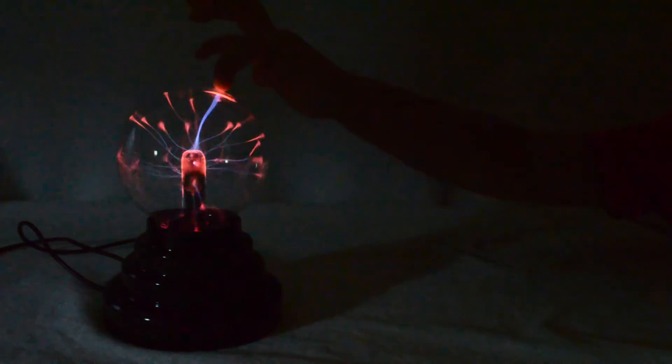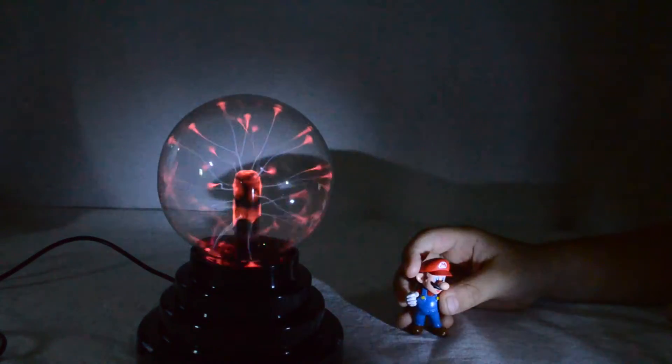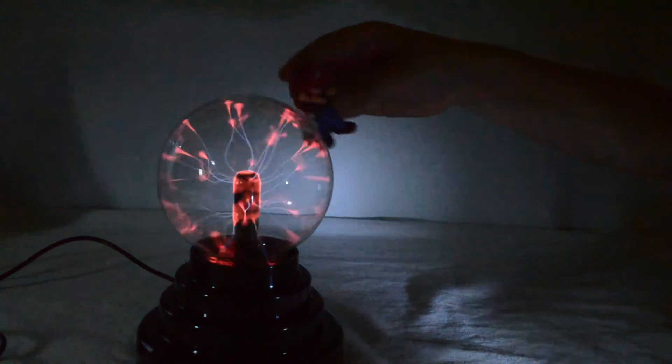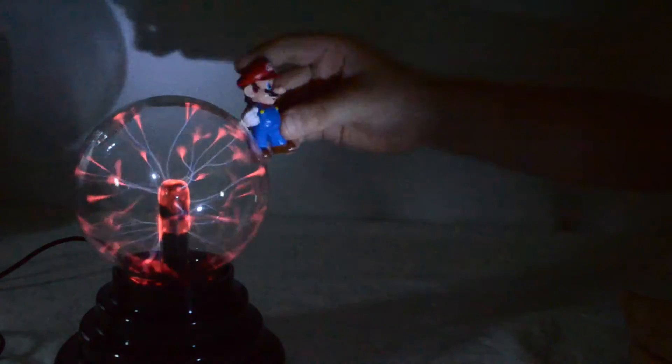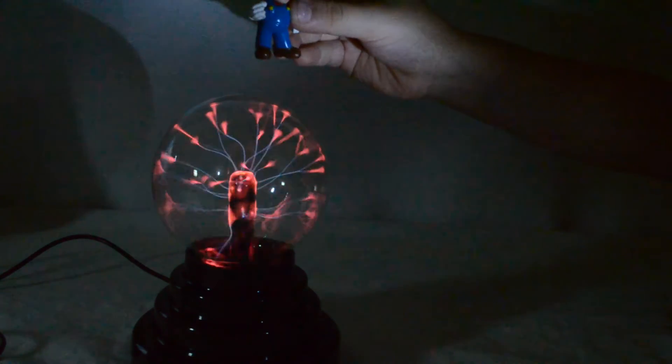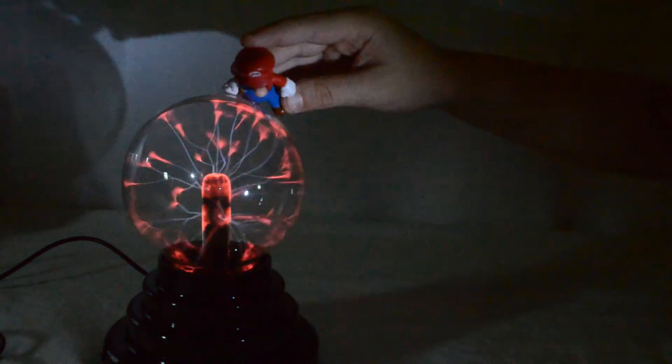When you touch it, the streamers are attracted to your hand because the electrons want to travel through you back to the ground. JoJo wants to see what will happen if Mario touches it. When Mario touches it, nothing's happening.